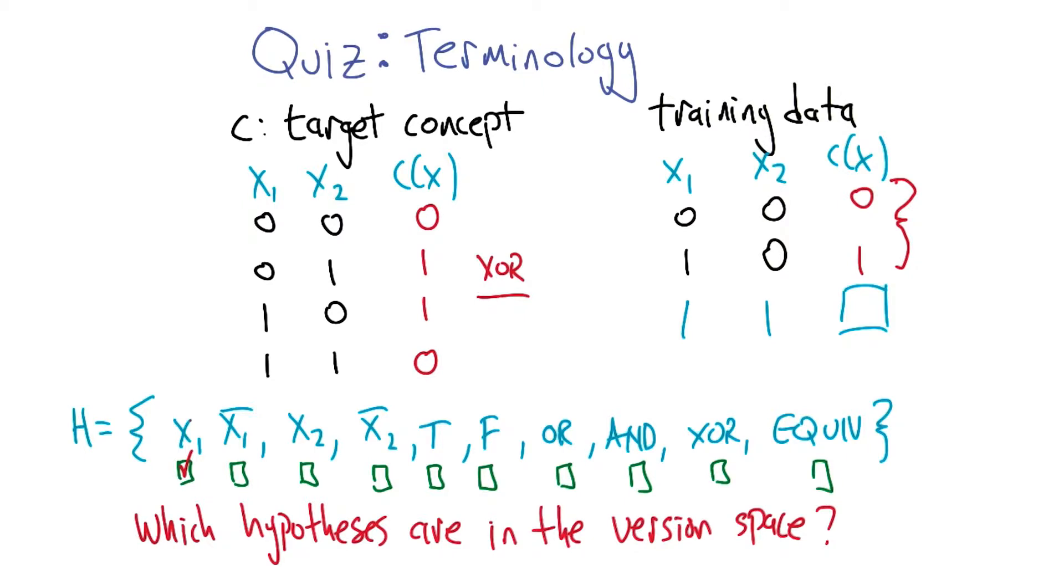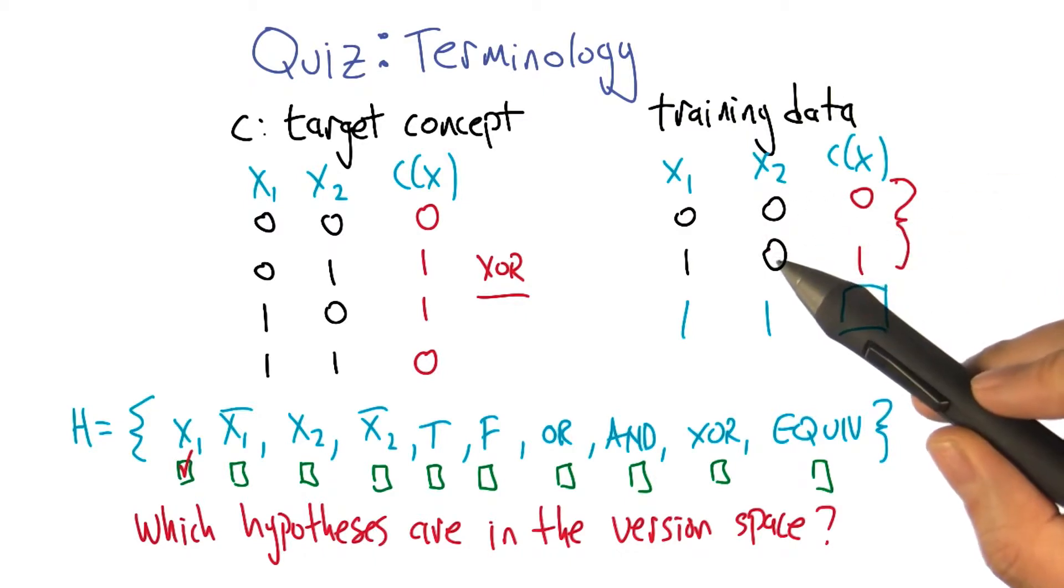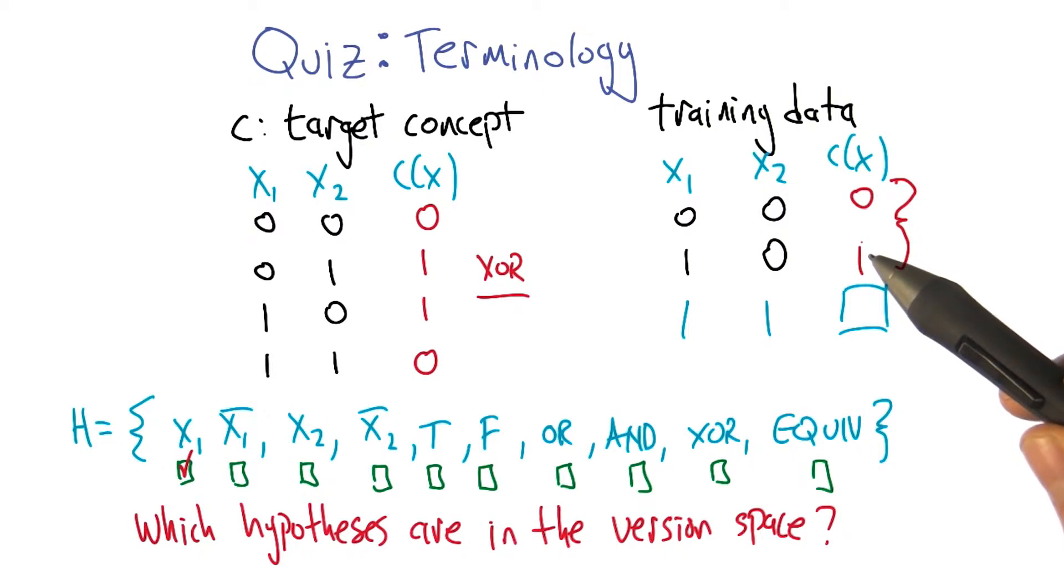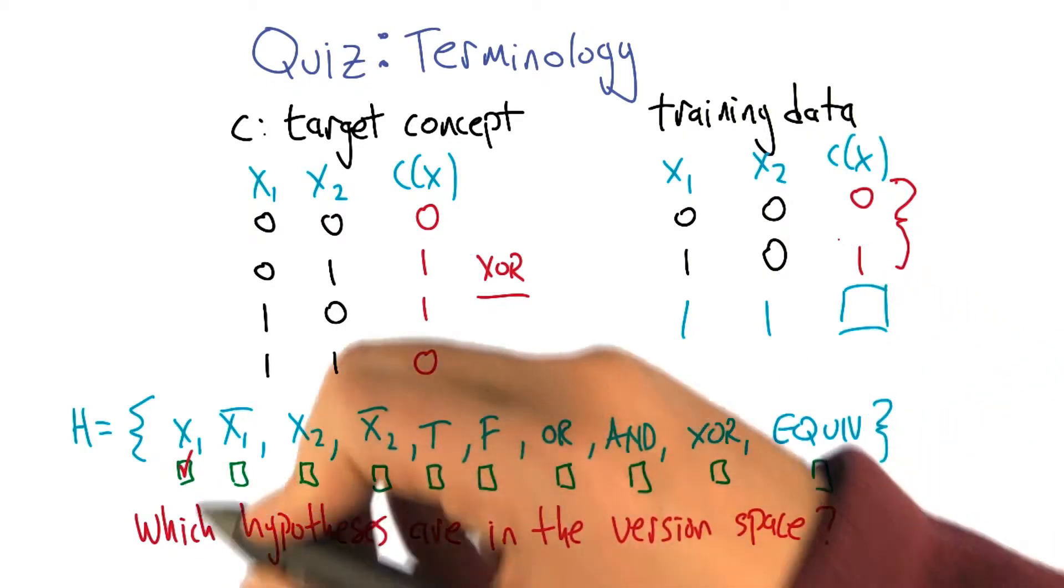Looking at x2, we can see that in the first case you go x2 0, c of x is 0. Yeah, so that's looking good, that's consistent so far. But then in the next row you get 0 and then you get the opposite of 0, you get 1, the complement of 0. So that definitely is inconsistent with just copying over x2.